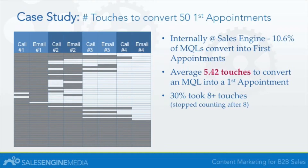Let's take a look at the results from following this 8-14 plan. Internally at Sales Engine, 10.6% of all of our MQLs convert into first appointments, and it takes on average 5.42 touches to convert. As you can tell by this chart, where we measure the inflection point at which MQLs convert into first appointments, it's all over the board. There's only one case where the first call actually resulted in a conversion into an appointment out of 50. Most took several calls and several emails before converting. But the bottom third maxed out at 8 because that's where we measured the 8-14 process, and it wasn't until follow-up of website visits, email interaction, or other content downloads after the initial eight touches that these prospects actually converted into first appointments.